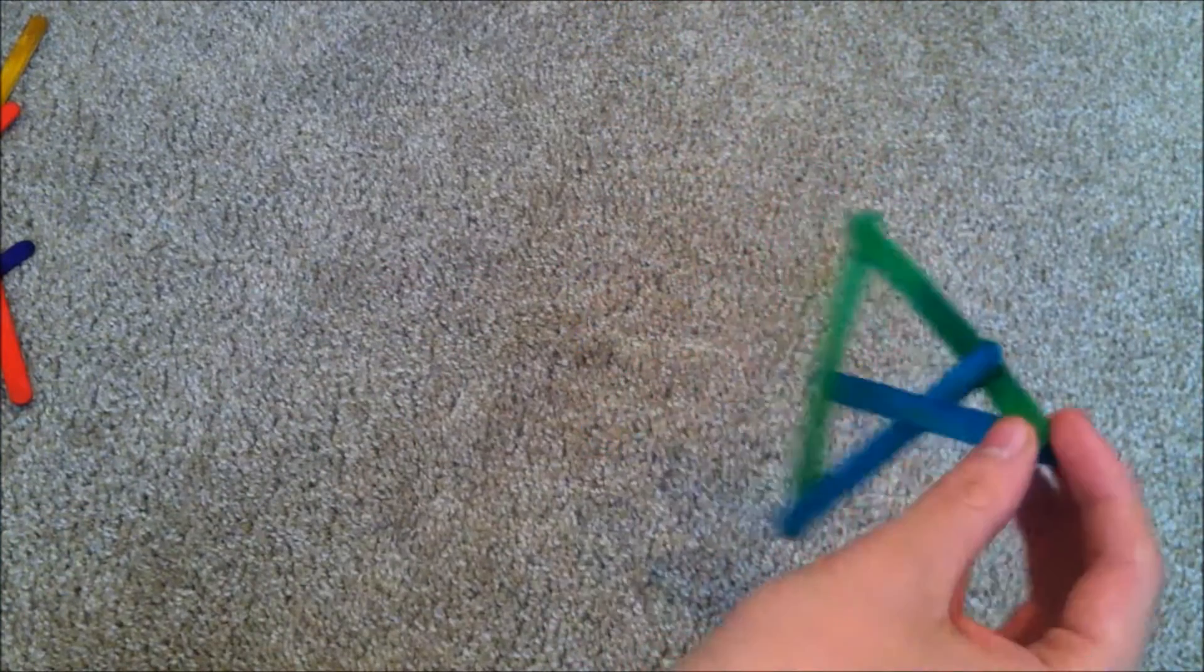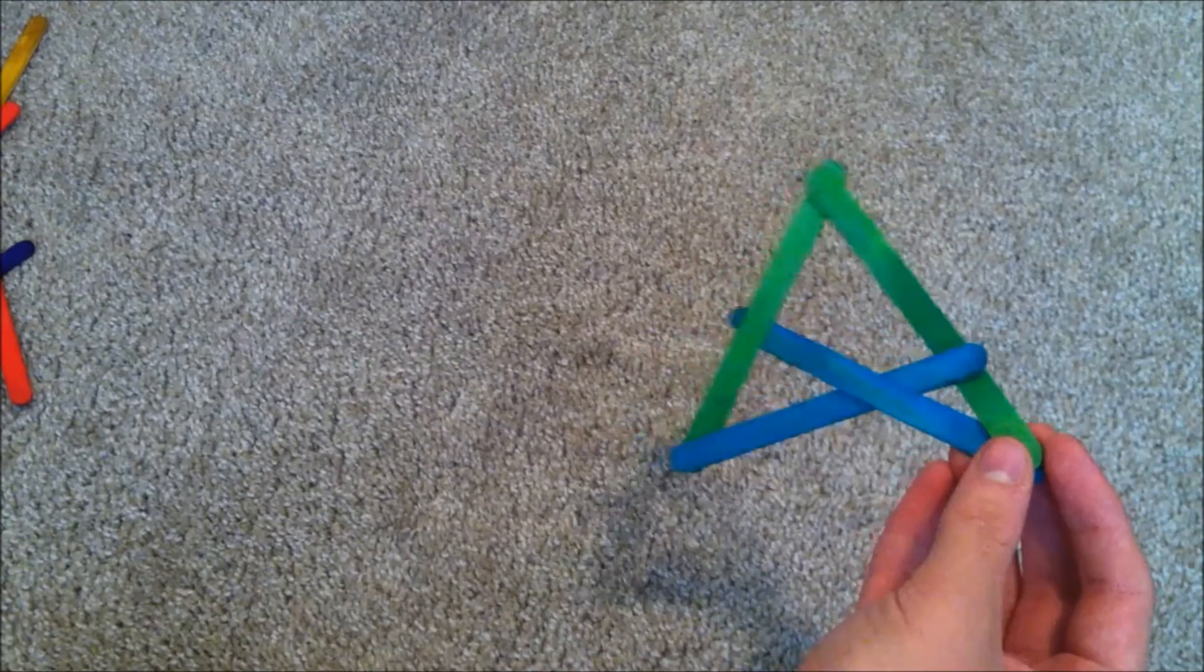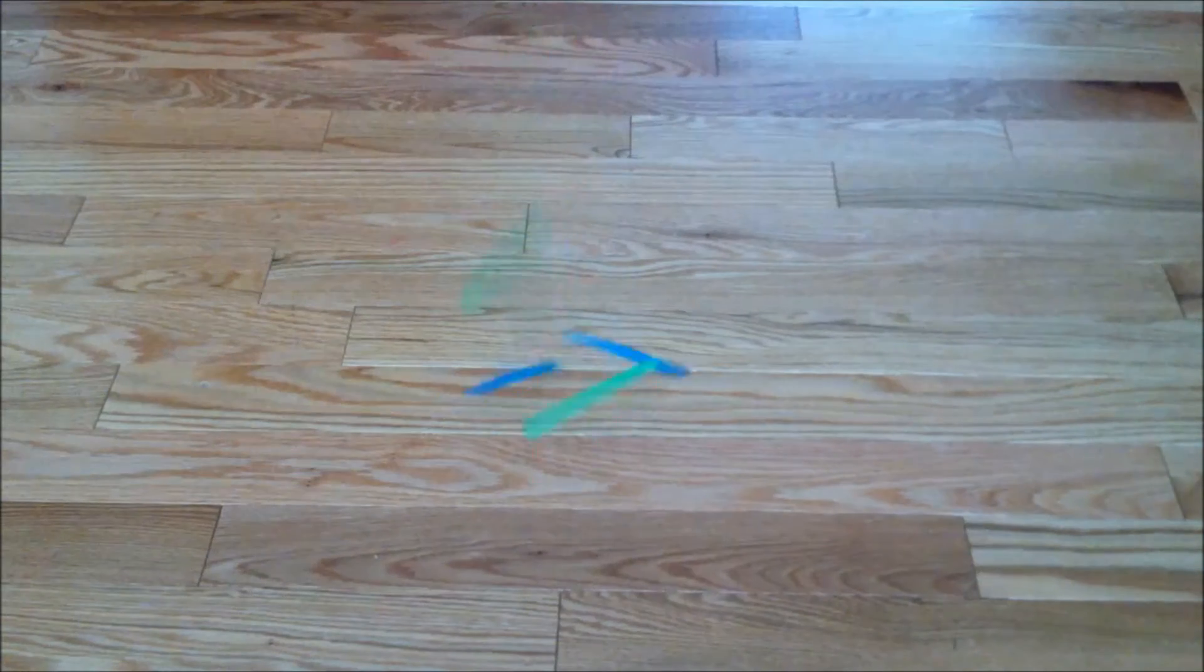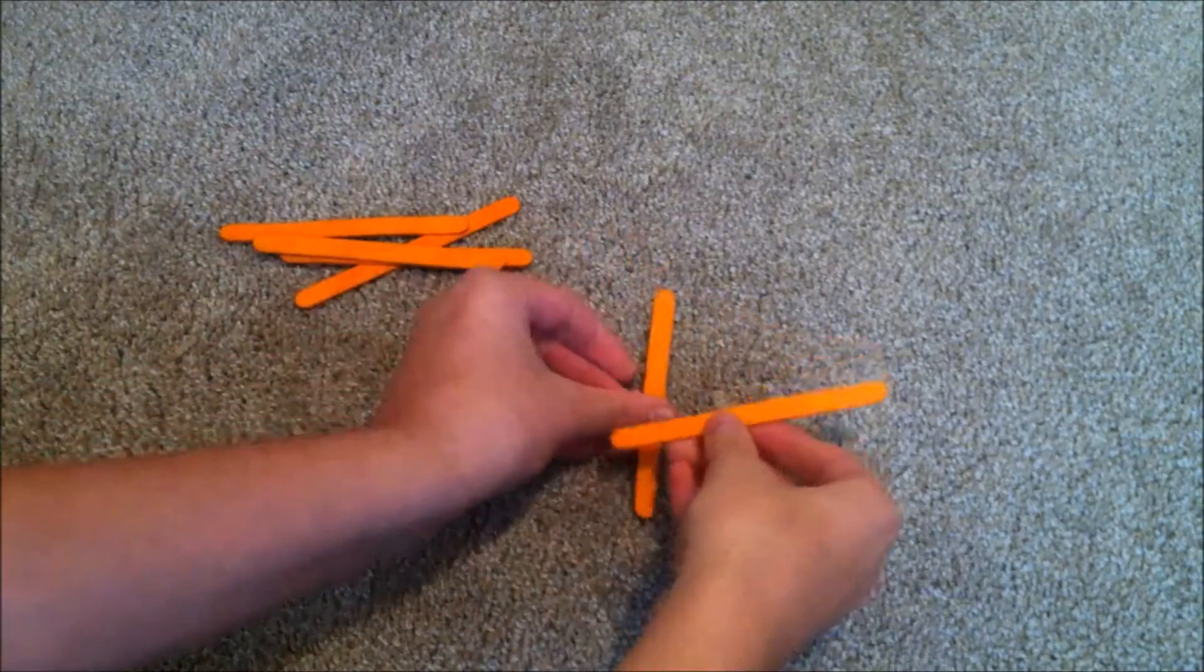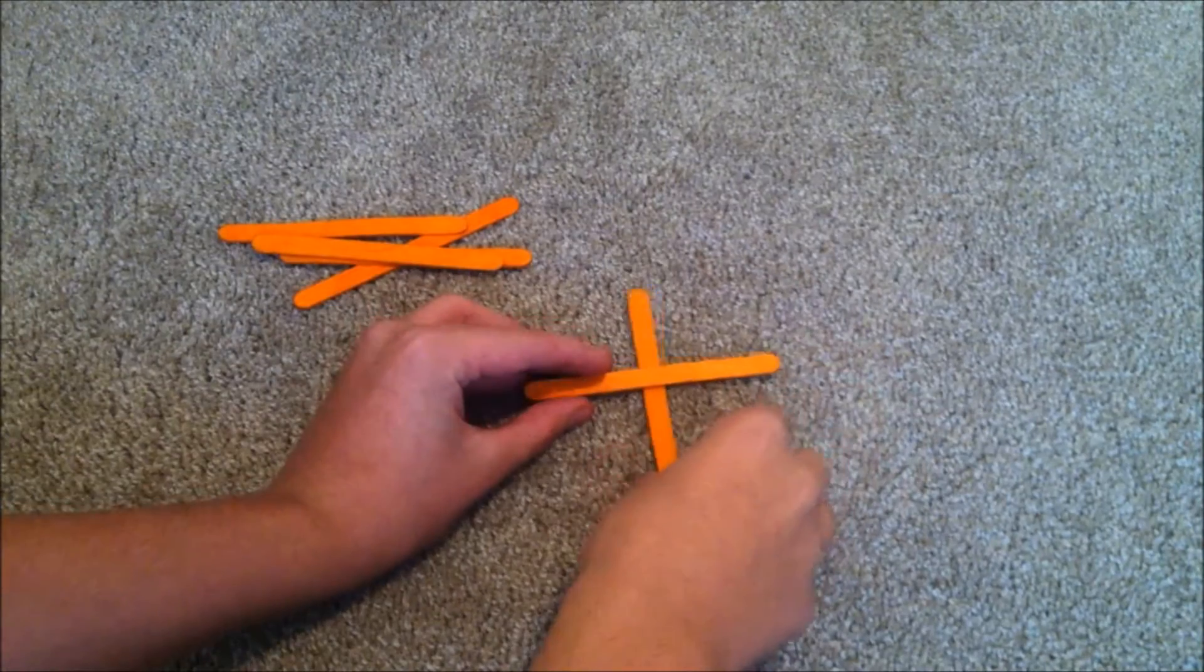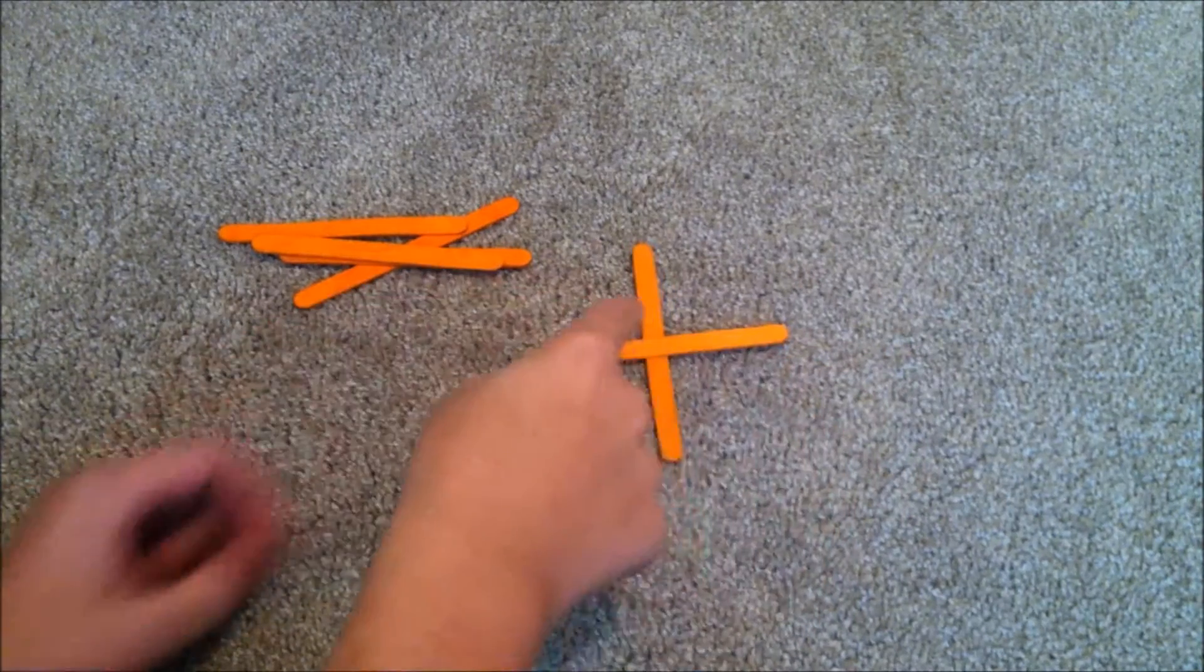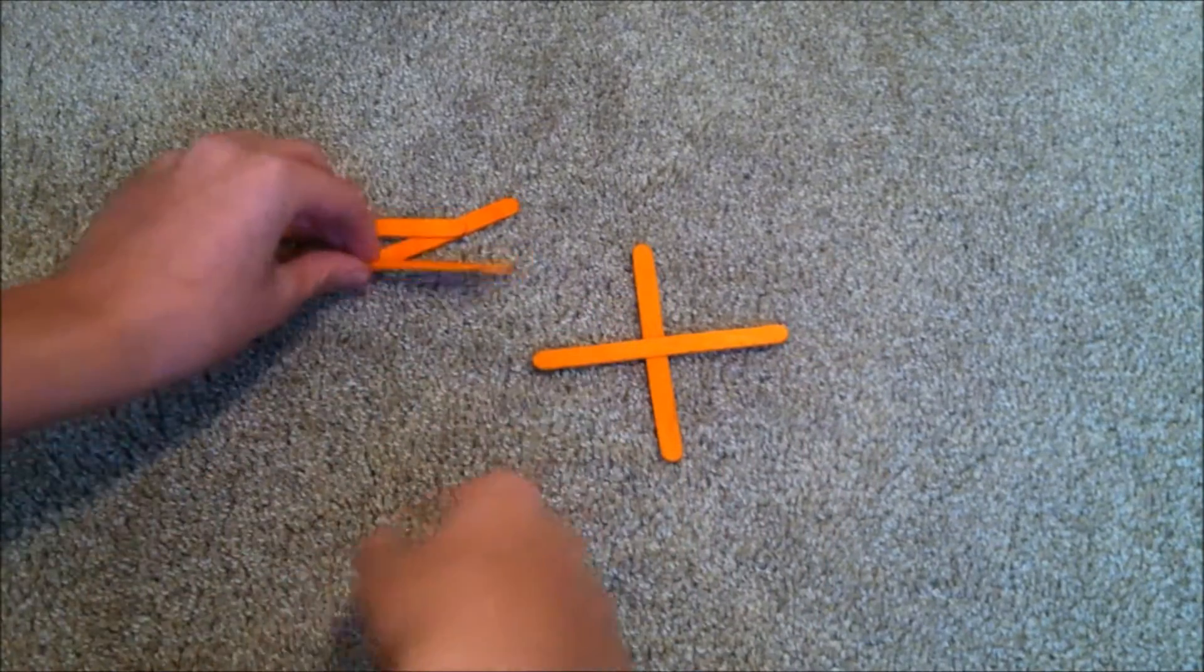For this next one, you'll need six sticks. This one's called the Four Square. Make a cross with the middle one overlapping in the center, then slide these next two under the vertical middle one.